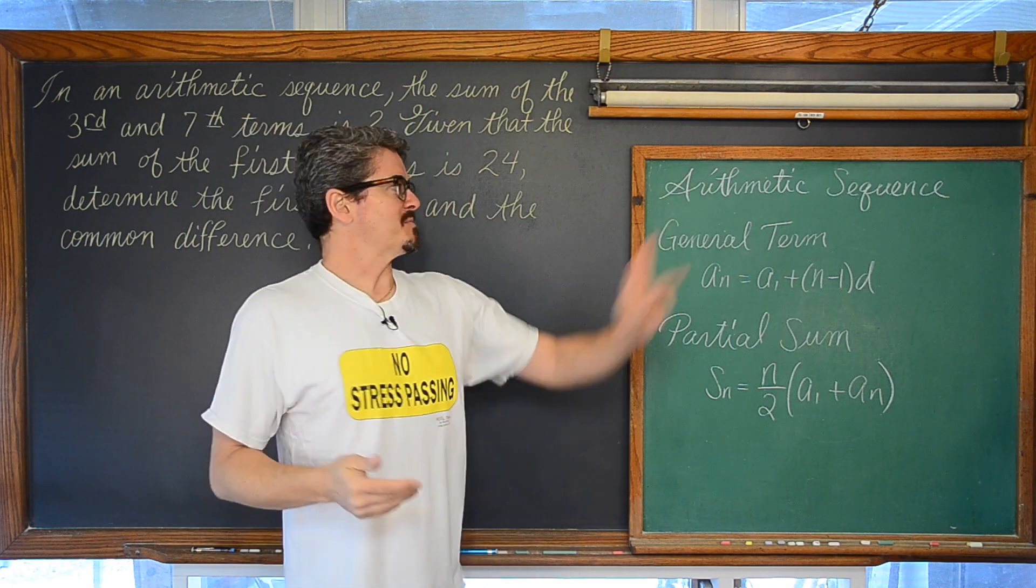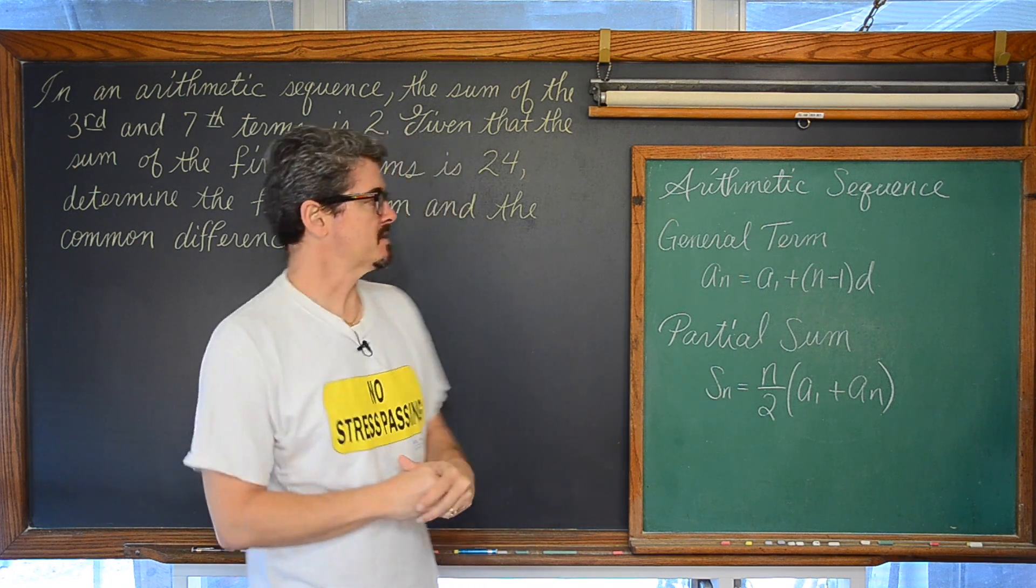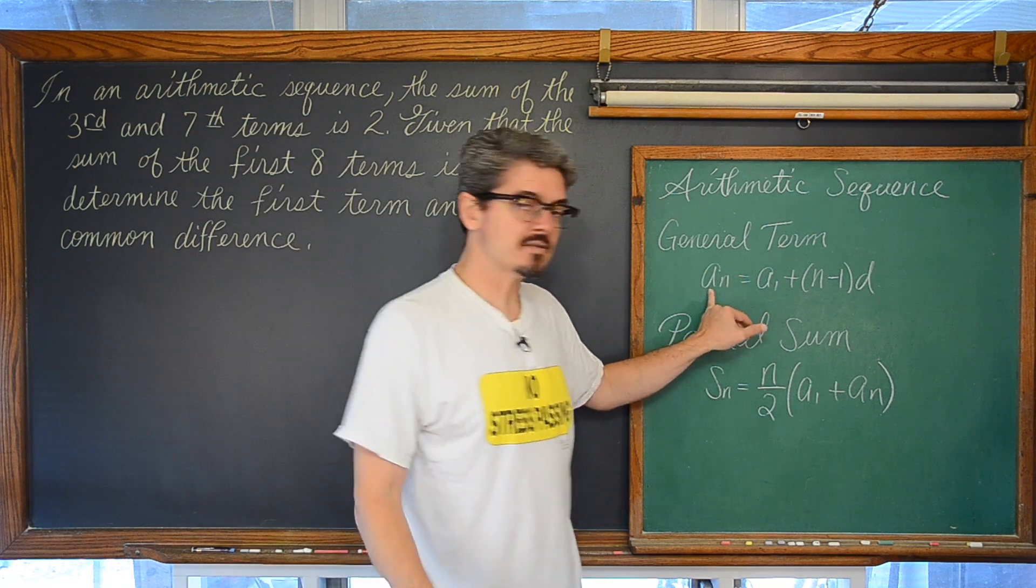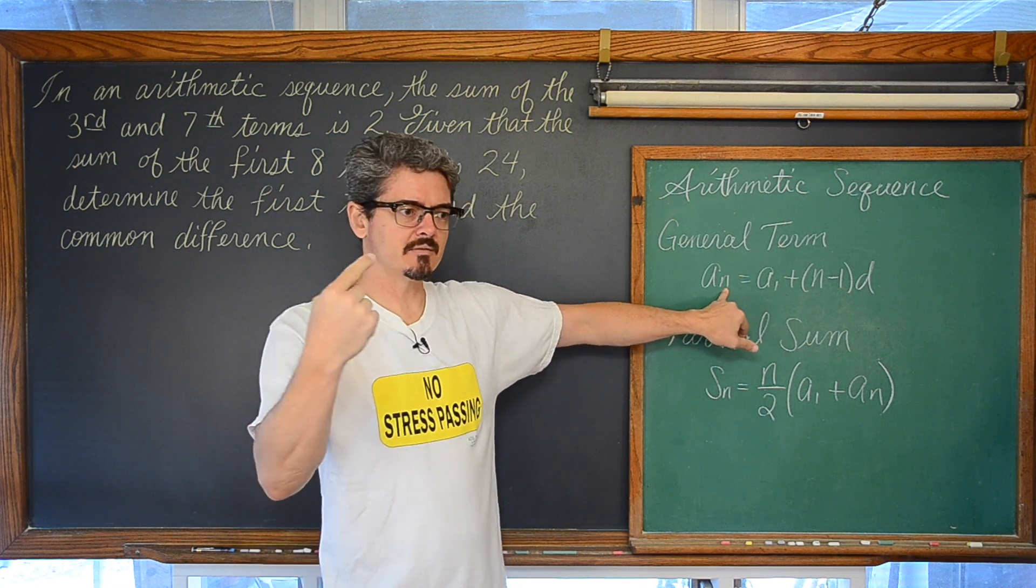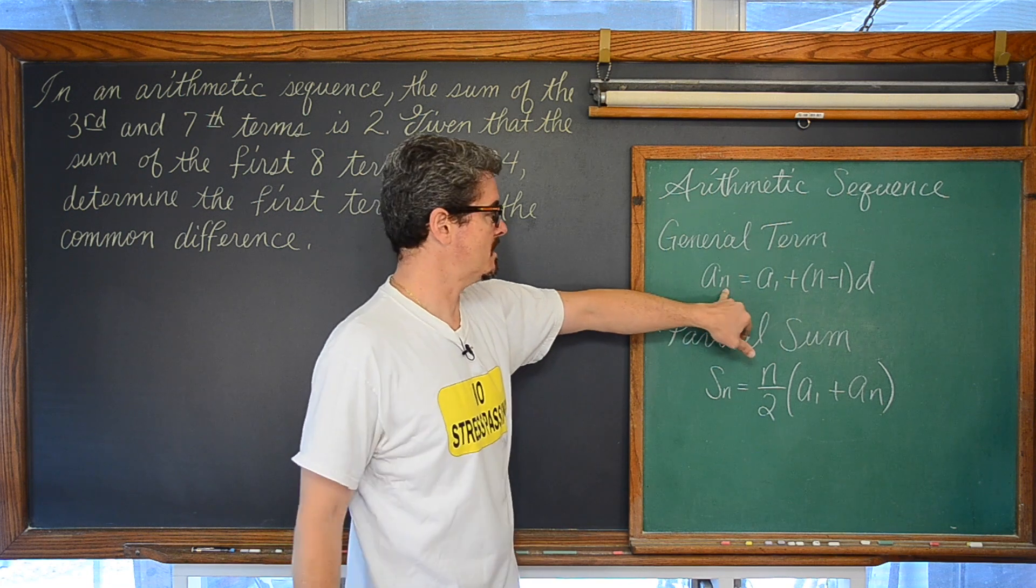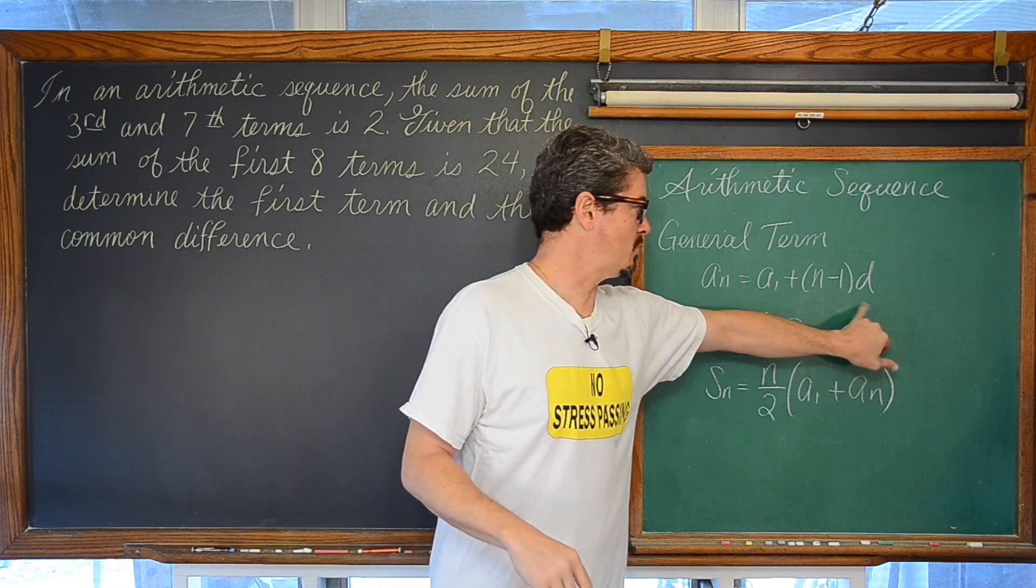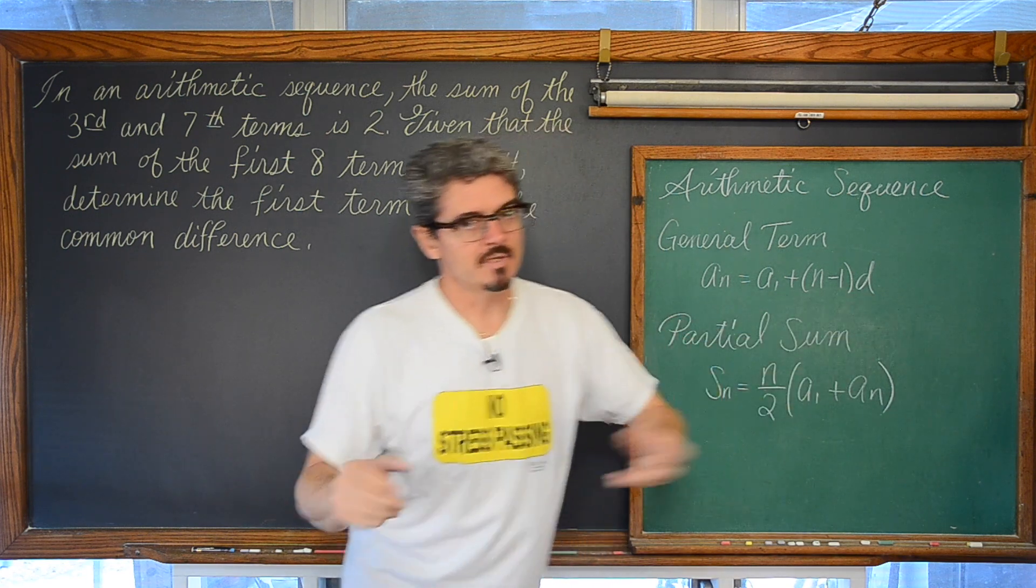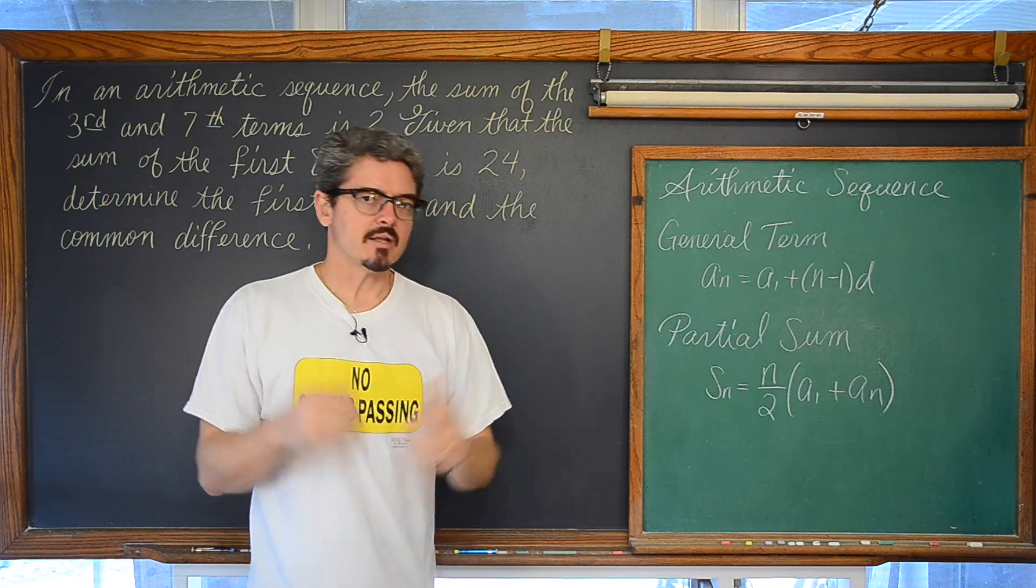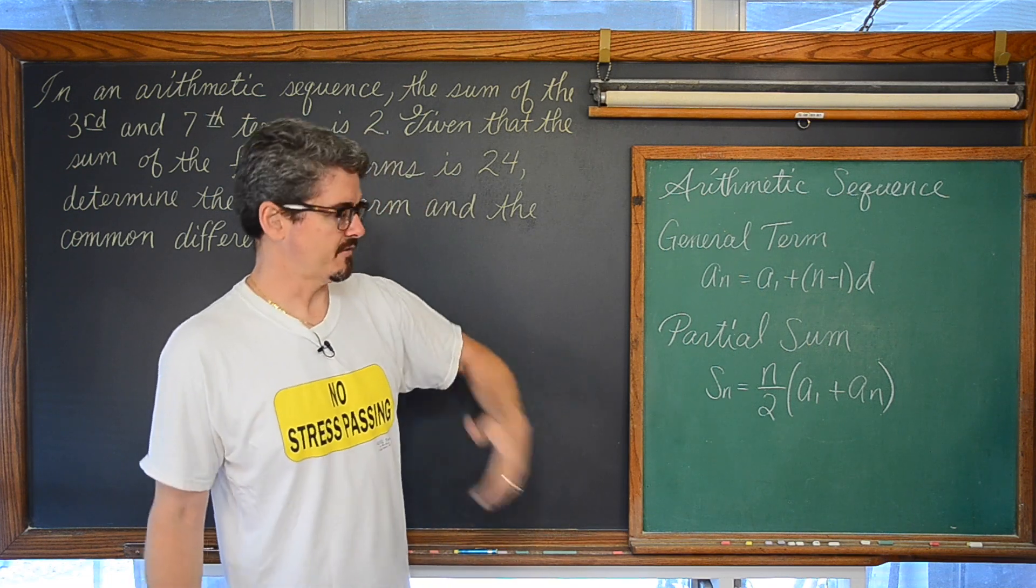Let's not forget that an arithmetic sequence is just basically a list of numbers that are created with constant addition. Your general term is a sub n. n is just that value that is counting along the index. You are looking at the first, the second, the third number, and so on. a sub n is equal to a sub 1, the first term, plus n minus 1 times d, your common difference. Maybe you are constantly adding by 2 or 5 or minusing 7 every time, or some kind of fractional value.